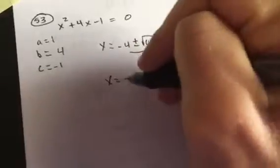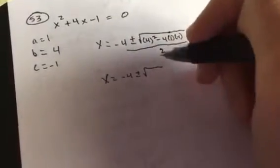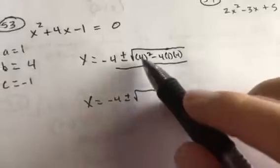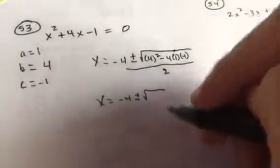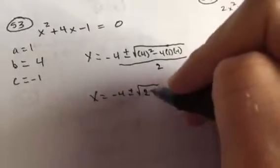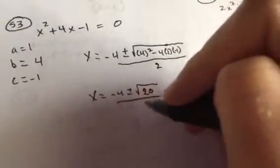And be very careful, x equals negative 4, plus or minus the square root. Inside, you're going to have 16, a negative times a negative is positive, 16 plus 4 will give you 20, all over 2.